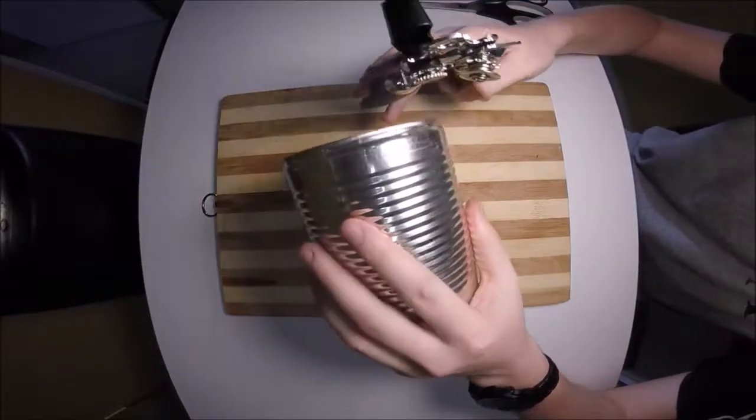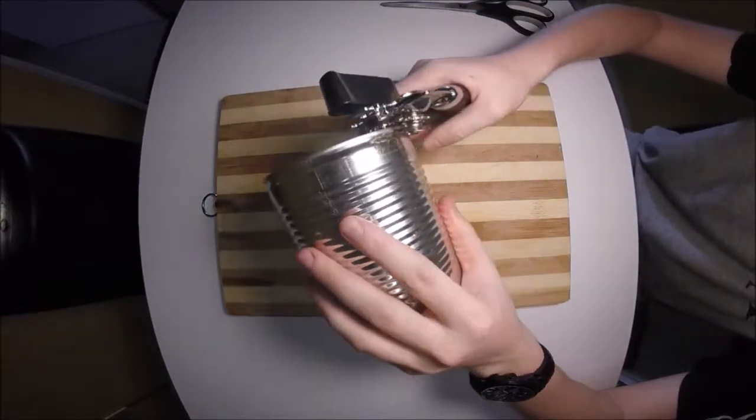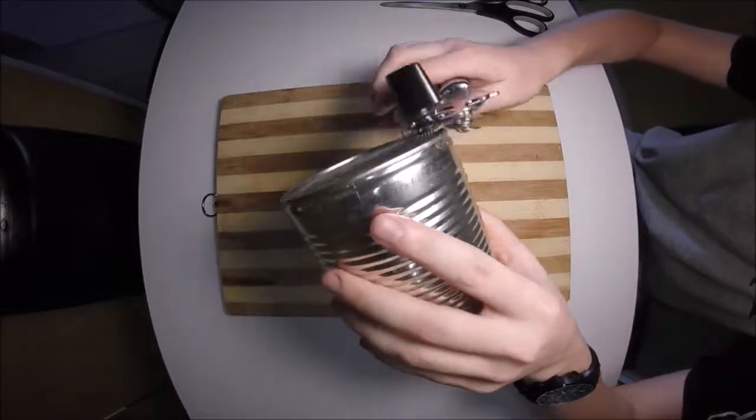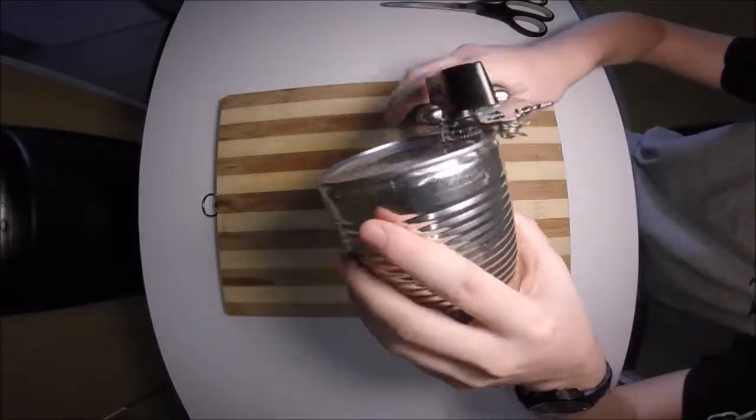First step is to disassemble the can. I used a can opener to take off the bottom of the can to start. As you can see, I worked my way around the can, slowly cutting it.